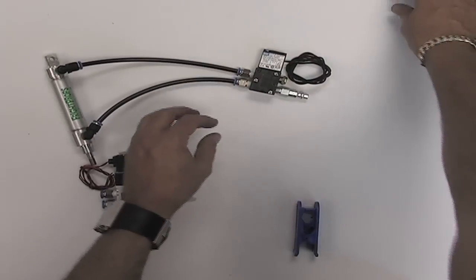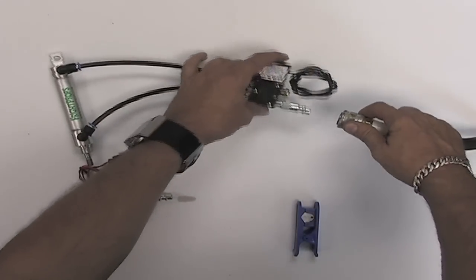Now the quick connect goes to your barrel connector from your compressor.